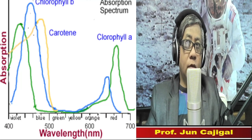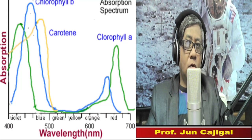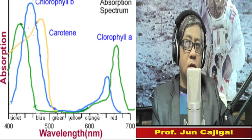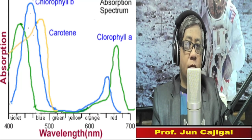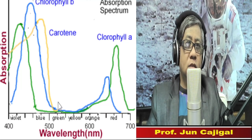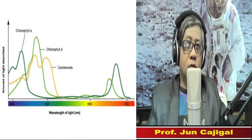Wavelengths absorbed by chlorophyll and other photosynthetic pigments generate electrons to power photosynthesis. All photosynthetic organisms have chlorophyll a, which absorbs violet, blue, and reddish-orange wavelengths and reflects green and yellow-green wavelengths. Accessory photosynthetic pigments including chlorophyll b and chlorophyll c absorb energy that chlorophyll a does not. Chlorophyll only triggers a chemical reaction when associated with proteins embedded in the thylakoid membrane.